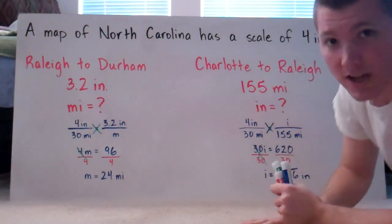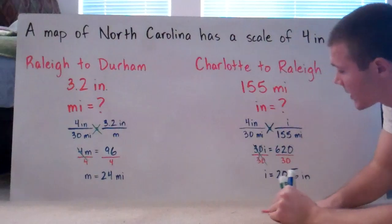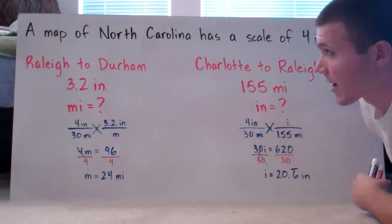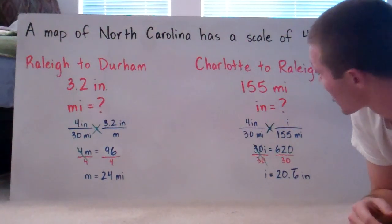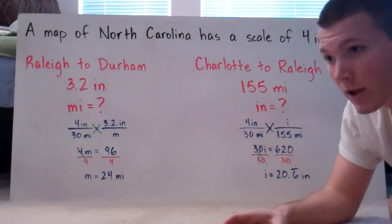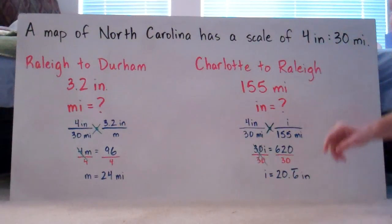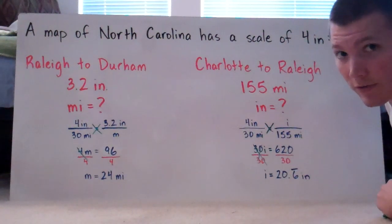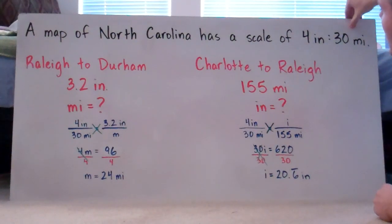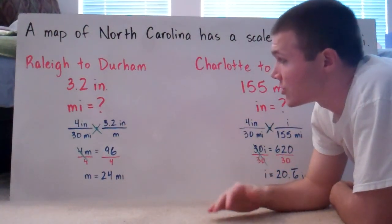Here is all the data you're going to see. For example, a map of North Carolina has a scale of four inches for every 30 miles. That means four inches on the map equals 30 miles in real life. For example, Raleigh to Durham on the map is 3.2 inches apart, and we want to know how many miles apart that is in real life.